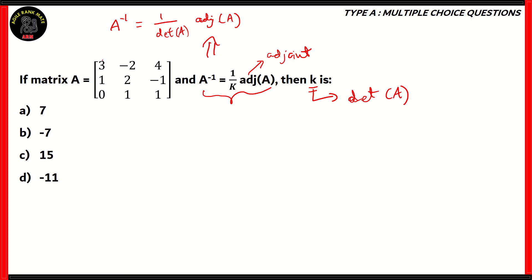Now, what do we mean by the determinant? It's a quantity in a matrix that's easier to find than calculating the entire inverse matrix. To find the determinant of A, we take the top row and start from left to right. We take the left element in the first row, hide its row and column, and the remaining elements form a two-by-two matrix. So we take 3 outside and then block out −2, 4, 1, and 0.